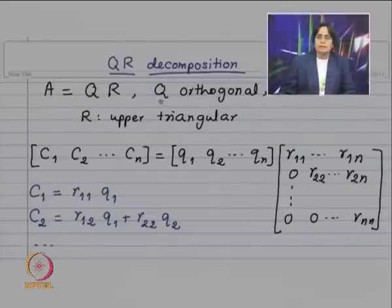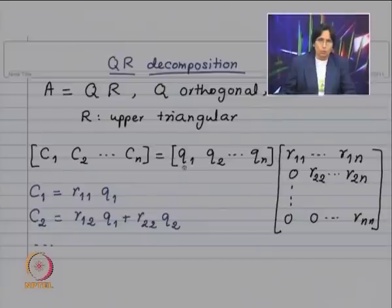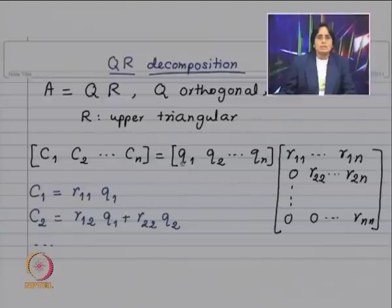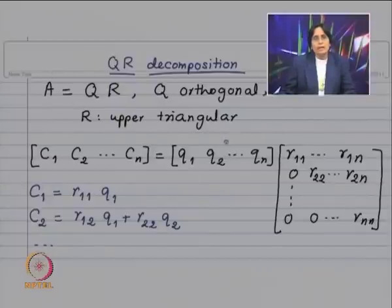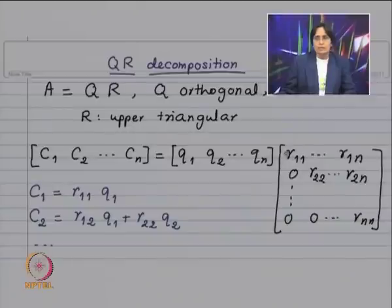Yesterday we saw that Q being orthogonal means the columns of Q form an orthonormal set. That means each column vector has Euclidean norm equal to 1, and if you consider the standard inner product on R^n, the inner product of Qi with Qj will be 0 if i is not equal to j. For simplicity, we are assuming A to be a real invertible matrix. R being upper triangular means all entries below the diagonal are equal to 0.